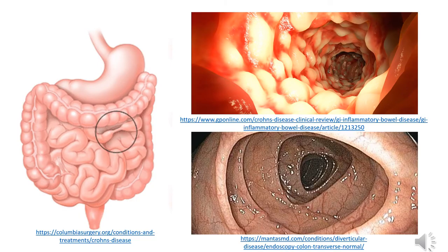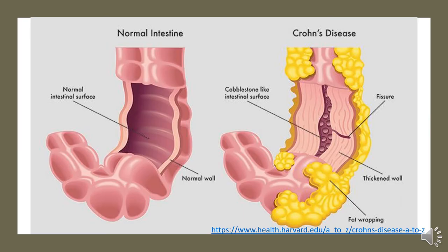Looking at the image on the left, the area circled is a stricture — a narrowing of a passage that will obstruct the intestine and make it difficult for waste to pass through. The bottom right shows what the intestine of a healthy individual looks like — it's more smooth, whereas the image above has bumps giving the intestine that cobblestone appearance. Another image shows the cobblestoning, the thickened wall from inflammation and fat wrapping around the intestine, and a fissure, which is a tear in the wall.